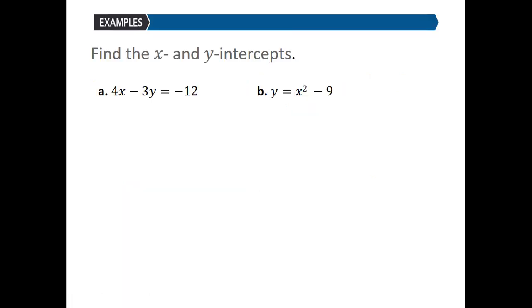We'll do a few examples. Part A is to find the x and y-intercepts of 4x minus 3y equals negative 12. I like to do this in a chart, but if we let x equal zero and solve for y, we get 4 times 0 minus 3y equals negative 12, so negative 3y equals negative 12. Dividing by negative 3 gives us y is equal to 4.